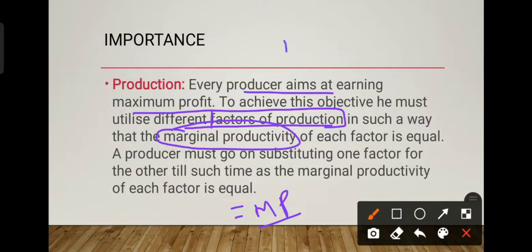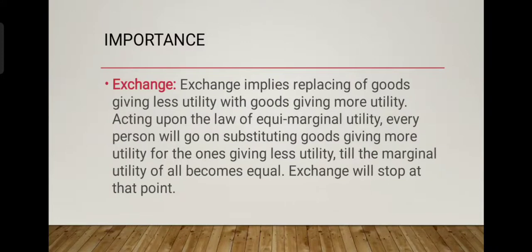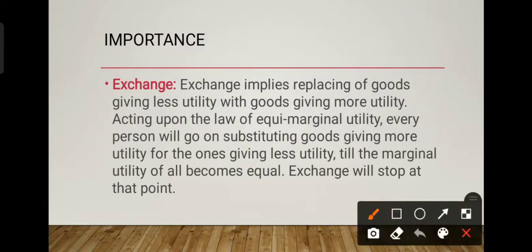He wants to equate the marginal productivity of land and labor, and the marginal productivity of land and capital. There are two factors, so he wants to be able to use the same resources where both will yield equal marginal productivity.